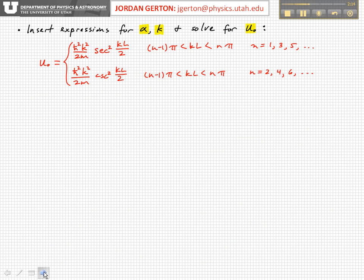what we find is that we actually get two solutions which correspond to n being even and n being odd. So when n is odd - one, three, five - that actually corresponds, if you remember, to even solutions of the wave function, that is that they're symmetric with respect to the center of the box.